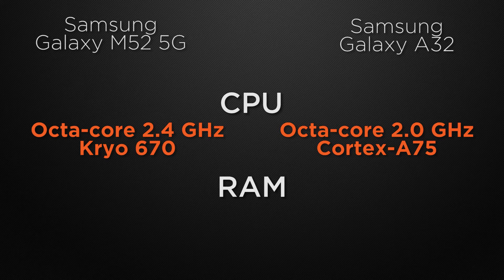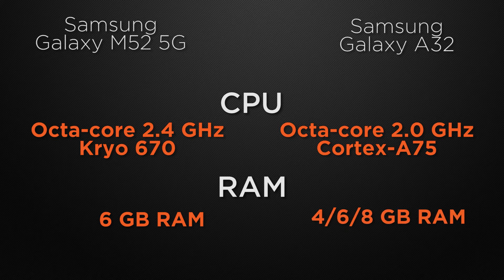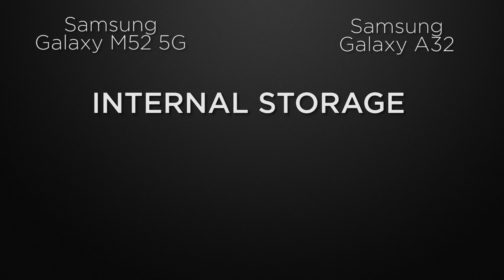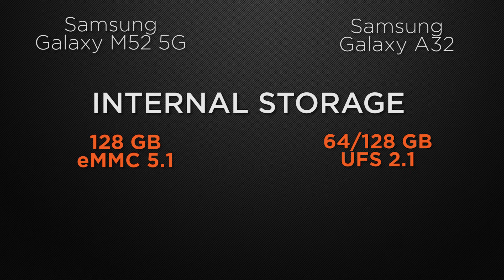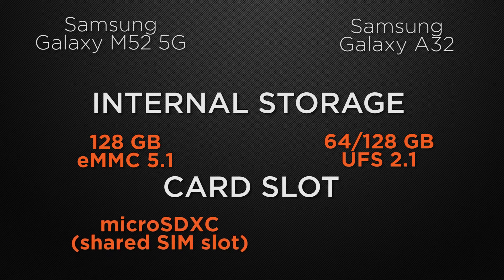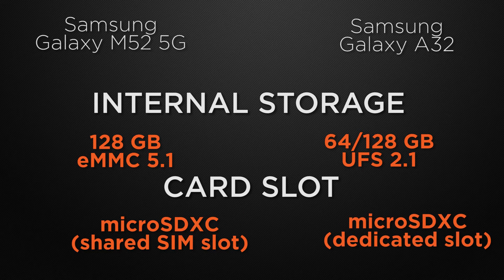About the RAM variants, the M52 has a 6GB RAM option whereas the A32 has 4GB, 6GB, and 8GB RAM options, so the winner here is the A32 because it has a bigger maximum RAM option. The M52 comes with 128GB of internal storage whereas the A32 has 64GB and 128GB options, but the winner is the M52 because it has faster read and write speeds. For external storage, the M52 has a shared card slot while the A32 has a dedicated card slot, so the winner here is the M52.